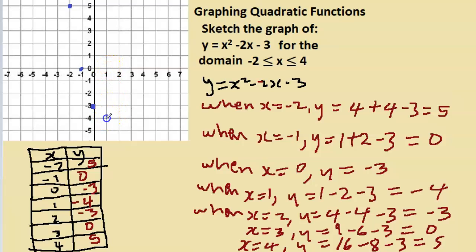(1, -4), (2, -3), (3, 0), (4, 5). As smooth as possible we connect all those points using a smooth curve, and there we have it.